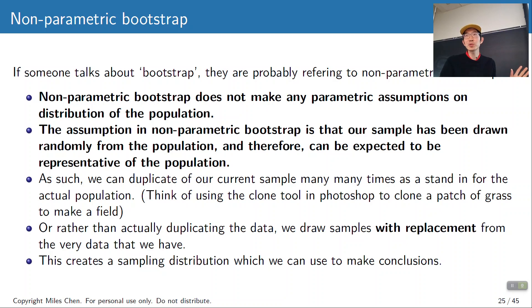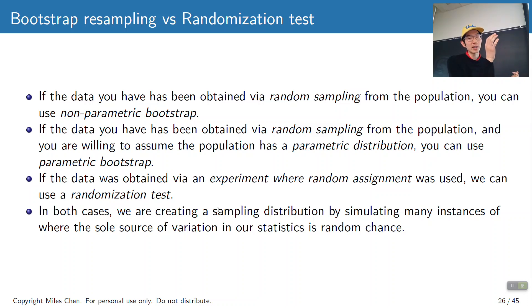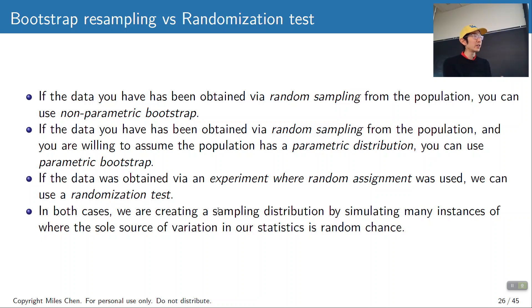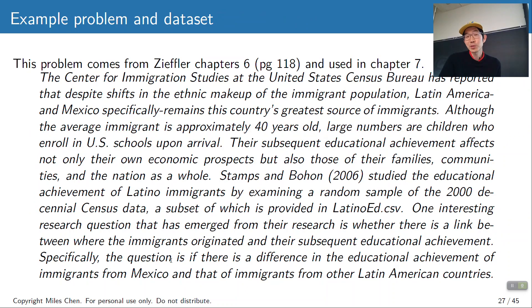A little note on the difference between all of these things: if you have data obtained via random sampling, it is reasonable to do nonparametric bootstrap. If you have data obtained via random sampling and you're willing to make distributional assumptions, you can do parametric bootstrap. If you don't have random sample data but ran an experiment with random assignment, then you can do a randomization test, which we covered on Monday. In all of these cases, we're generating a sampling distribution by simulating many instances where the source of variation is a random process — either random sampling or randomization.